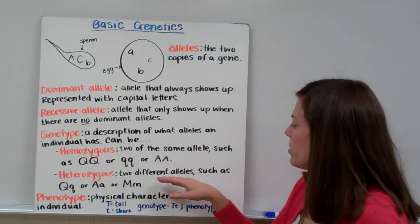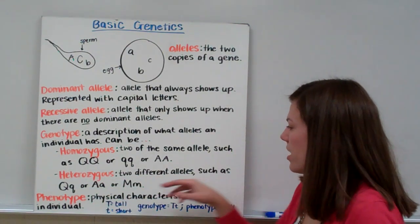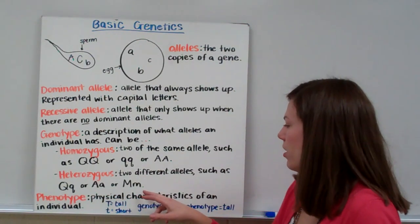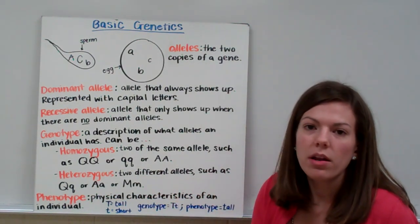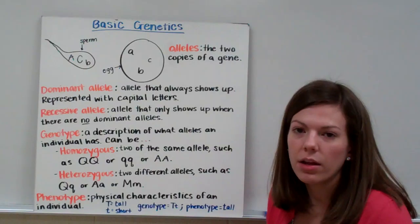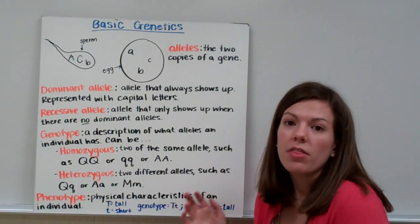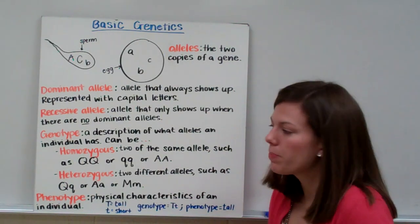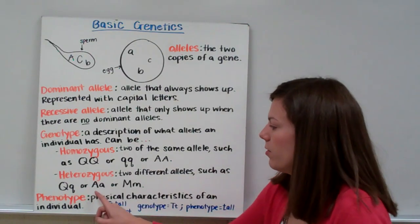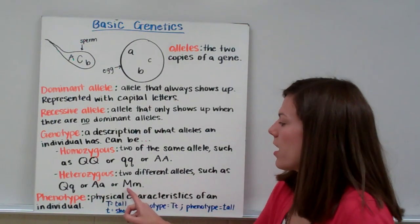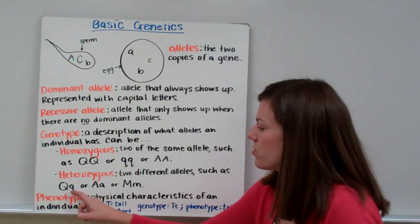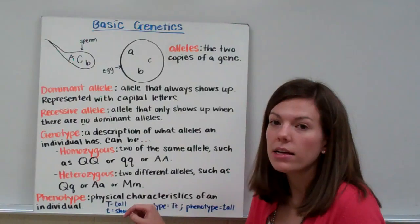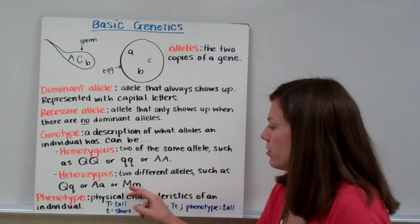Heterozygous is when you have two different alleles, such as big Q little Q, big A little A, or big M little N — one dominant allele and one recessive allele. Remember, the dominant allele will be the one that is expressed. So you would express big Q, big A, and big M. You would not express the recessive alleles because they are masked by the dominant alleles.